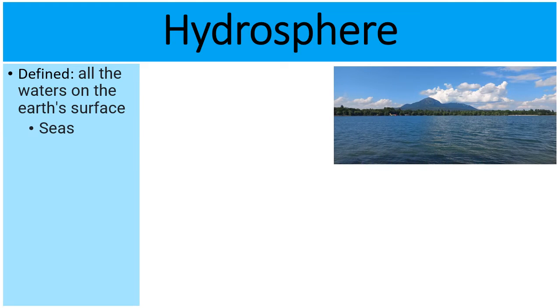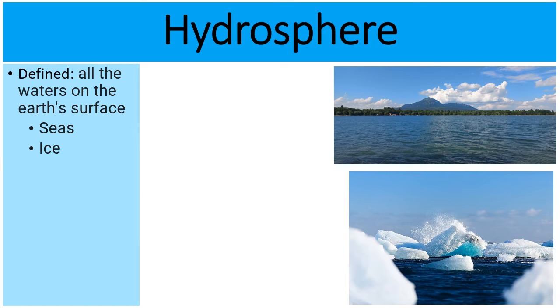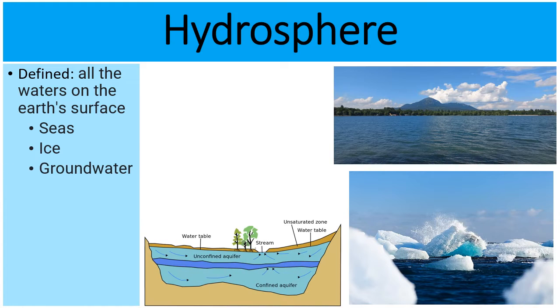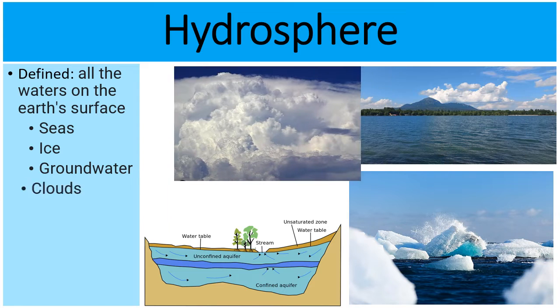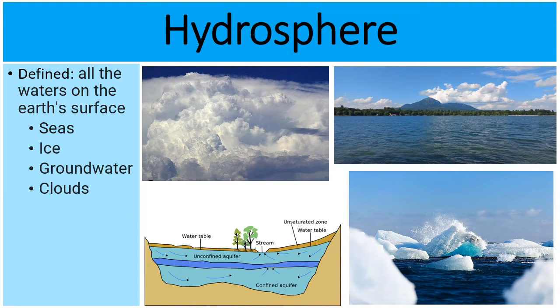So if we're looking at the water on the surface of the planet, we're talking about the oceans, the seas. We're talking about the ice, the frozen ice, the poles. We're talking about groundwater, the water that's under the ground that a lot of people use for drinking water. We're talking about the moisture in the sky, the clouds. All of this makes up the hydrosphere.